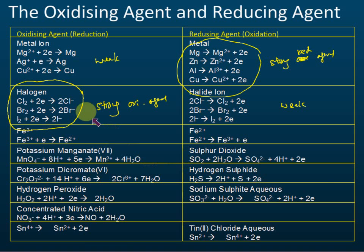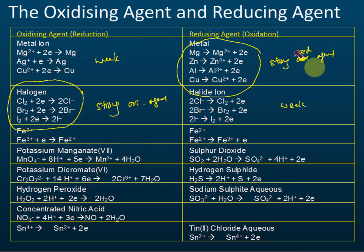For metals, their ions, halogens, and iron 3 ions, you need to know how to write the half equations. You must know how to write the half equations for these.